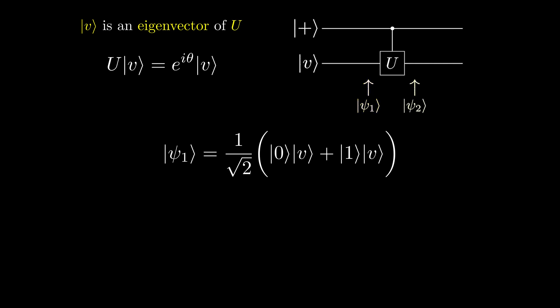At psi sub 2, we apply the controlled U gate. Nothing happens to the first superposition state since the control is a zero, but the second superposition state has the gate applied to the v state, since the control is a 1.